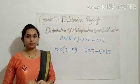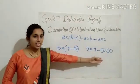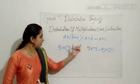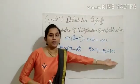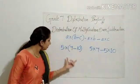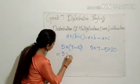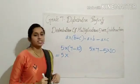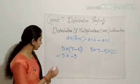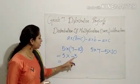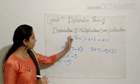We will start with an example. Here you see: 5 into 7 minus 10. I have distributed this 5 to 7, that is 5 into 7. The operation is subtraction. I have distributed 5 to 10, that is 5 into 10. Let us check whether we are getting the same answer. 5 into 7 minus 10: what is 7 minus 10? It is negative 3. So finally, 5 into negative 3 is equal to negative 15. That is the answer of the LHS.